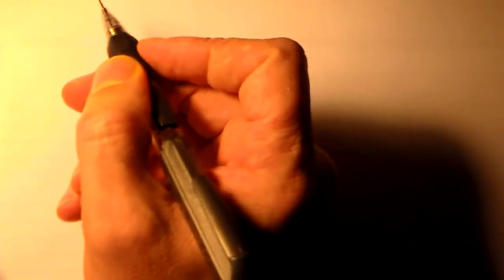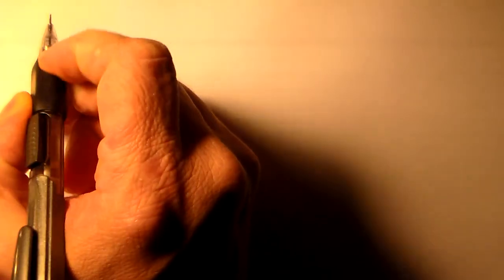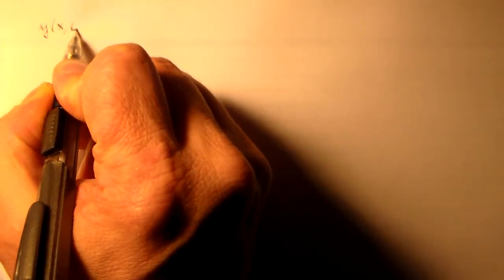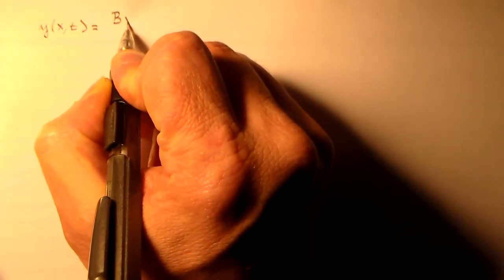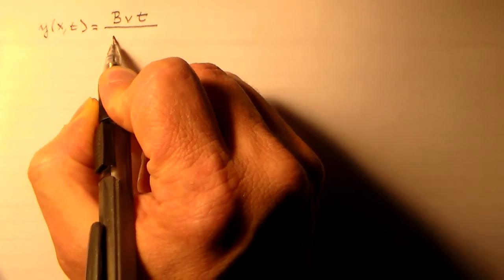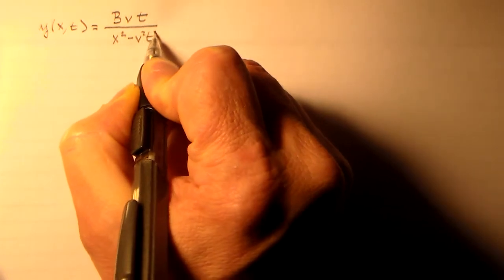Okay, so I'd like to talk about one of the problems that we didn't get to in class that I'd wanted you to look at, which was to take the function for the transverse wave y(x,t) is equal to some constant times the wave speed times the time, all over x squared minus v squared t squared. Was that correct? I think that was correct.